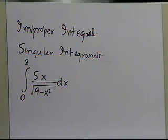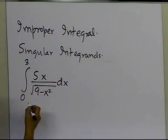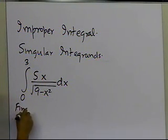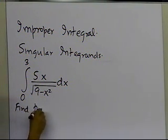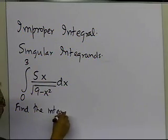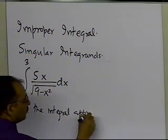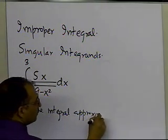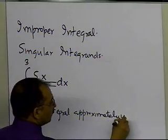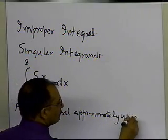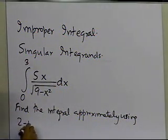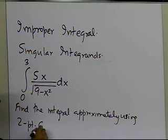So in this case, the example is asking you: given this integral, find the integral approximately using the two-point Gauss quadrature rule.